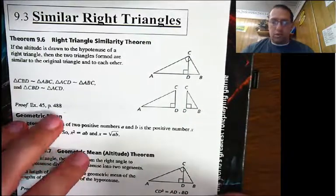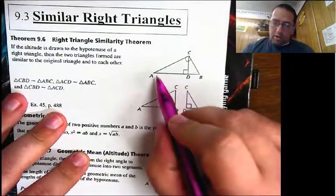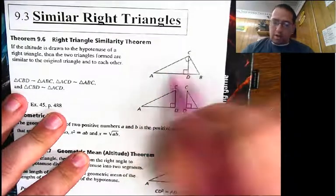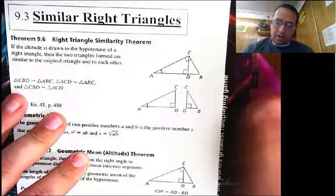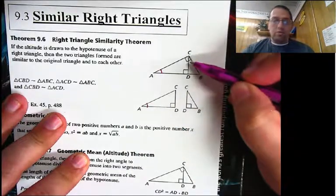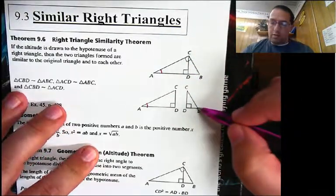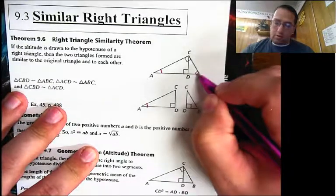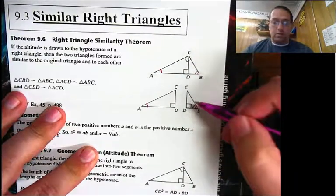And we can prove this really quickly using angle-angle similarity. This larger piece of the triangle has angle A, and we'll just take it and move it down, so angle A here is congruent to angle A there. I've got a right angle and a right angle, which means I have angle-angle similarity there. Here, angle B is the same as angle B in the large triangle. So these two are congruent, and they both have right angles, so again we have angle-angle similarity.